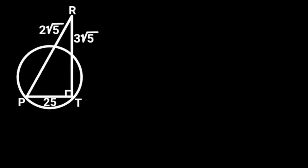This figure is a circle and a right triangle TRP, drawn in such a way that P and T are touching the circumference of the circle, and R is extended beyond the circumference of the circle. PT is 25 units, this length is 3√5 units, and this length is 2√5 units.